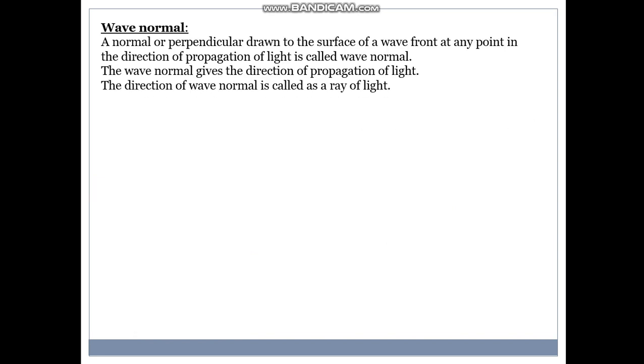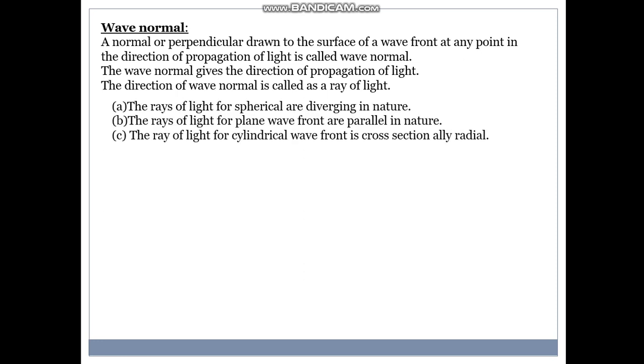Wave normal. A normal or a perpendicular drawn to the surface of a wave front at any point in the direction of propagation of light is called wave normal. The wave normal gives a direction of propagation of light. The direction of wave normal is called as the ray of light. The rays of light for spherical waves are diverging in nature. The rays of light for plane wave fronts are parallel in nature. The rays of light of cylindrical wave front is cross sectionally radial which we are going to see in the next slide.